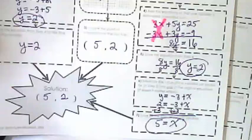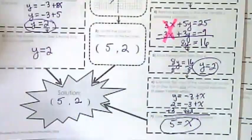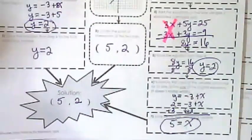So all three of our ways led us to the same xy pair of 5 comma 2. Which do you think was the easiest to work with?